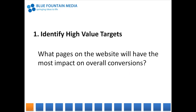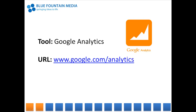In your first step, your objective is to figure out what pages to prioritize for conversion optimization. If you were to optimize just one page on the website, which one would it be? What pages will have the greatest impact on overall conversions? To help with this, I recommend using Google Analytics. It's free, and most websites already have it installed. If you're lucky, the website that you're working on will have a good amount of historical data already. Otherwise, you may need to wait a few days or even weeks before having statistically significant information.